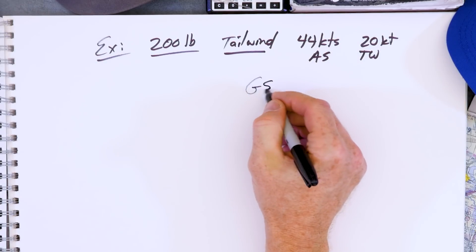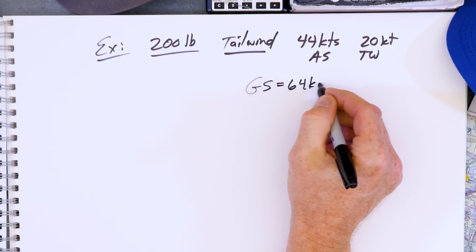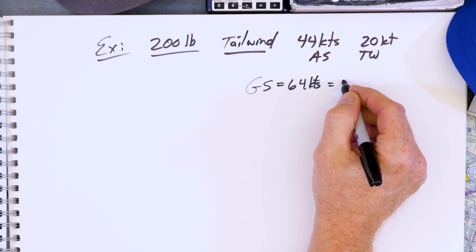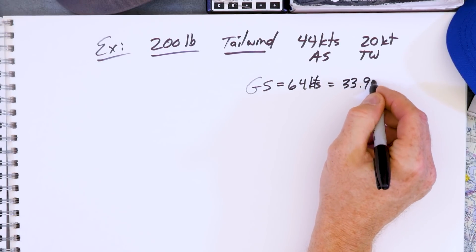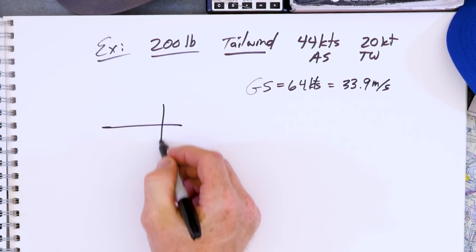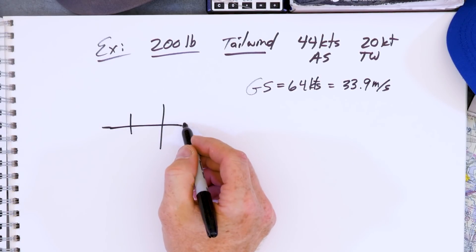So our ground speed is 64 knots, 33.9 meters per second. And so we're going to take our airplane now, and we're going to land with this ground speed.